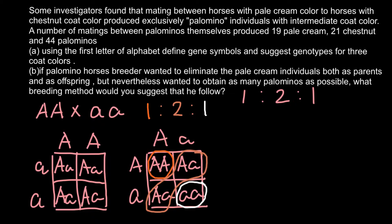This 1:2:1 ratio explains exactly what we see with incomplete dominance. If you are confused about the difference between incomplete dominance and codominance: in codominance, the heterozygous color would not be intermediate. Instead, the horse would show patches of pure chestnut color and patches of pure pale cream color side by side.